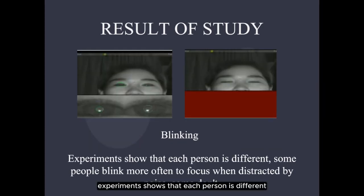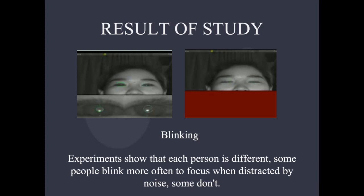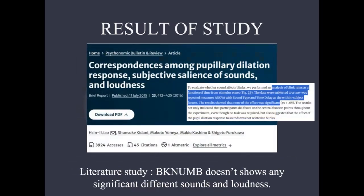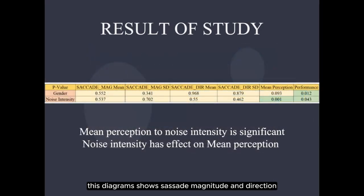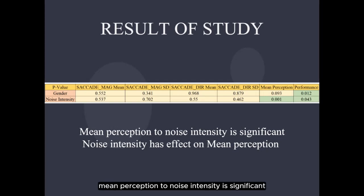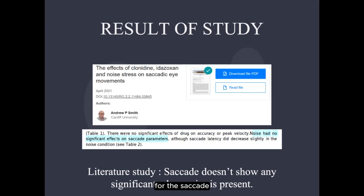For blinking, experiments show that each person is different — some people blink more often to focus when distracted by noise, some don't. For blink number, according to our literature study, it doesn't show any significant difference across sounds and loudness. These diagrams show the magnitude and direction, and mean perception and performance. Mean perception to noise intensity is significant, meaning noise intensity has an effect on mean perception. This card doesn't show any significance when noise is present.